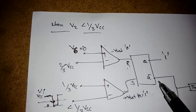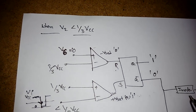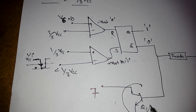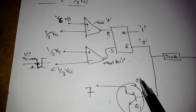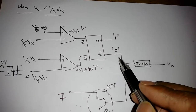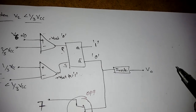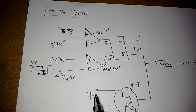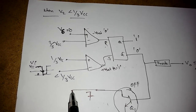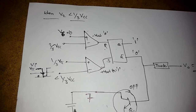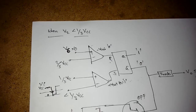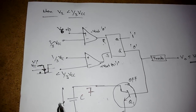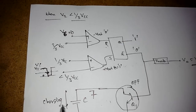When Q=1 and Q bar=0, Q bar goes to transistor Q1, so Q1 turns off. The logic 0 from Q bar goes to the inverter, so the output becomes high. With the transistor off, the capacitor now sees a charging path through RA toward Vcc and begins charging from 0 volts.